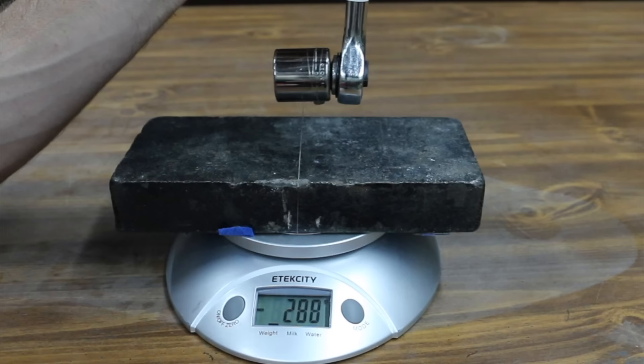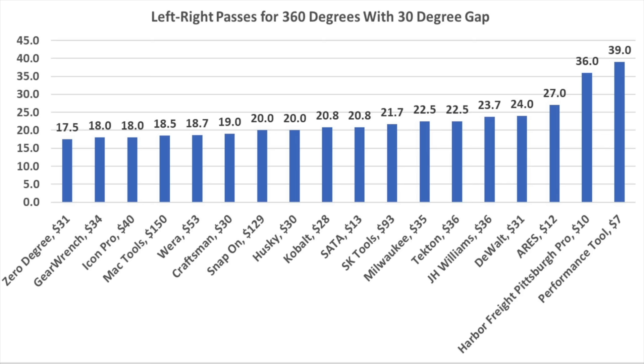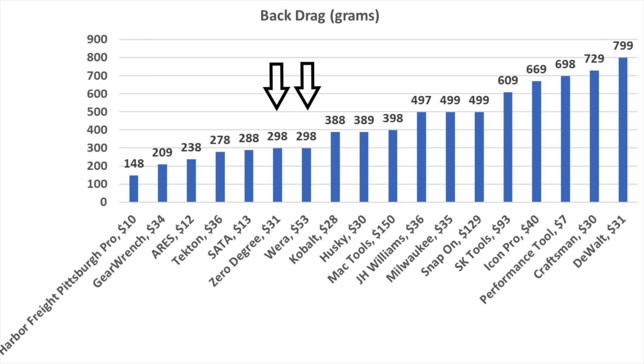The Performance Tool once again really struggled at 698 grams of back drag. Other affordable ratchets like the SADA have less than half the amount of back drag. A high performance ratchet will perform well on both the working arc swing and the back drag test. While Performance Tool didn't finish in last place on this test, it did finish in the last three.